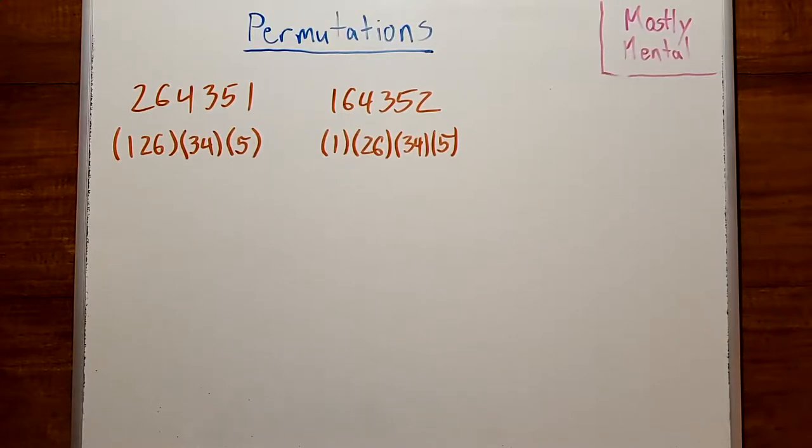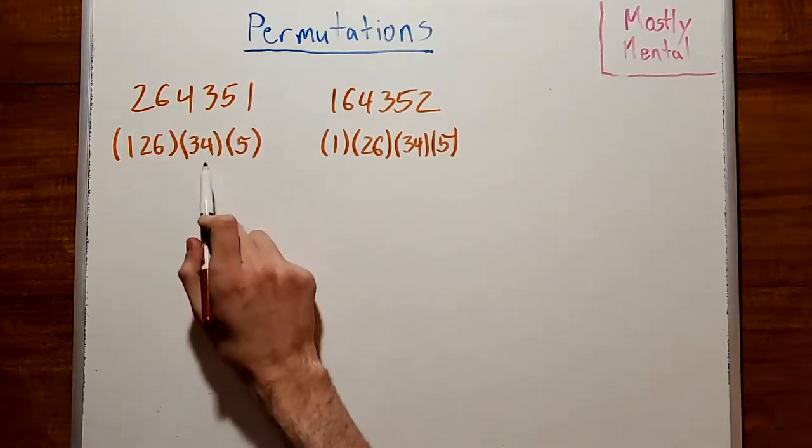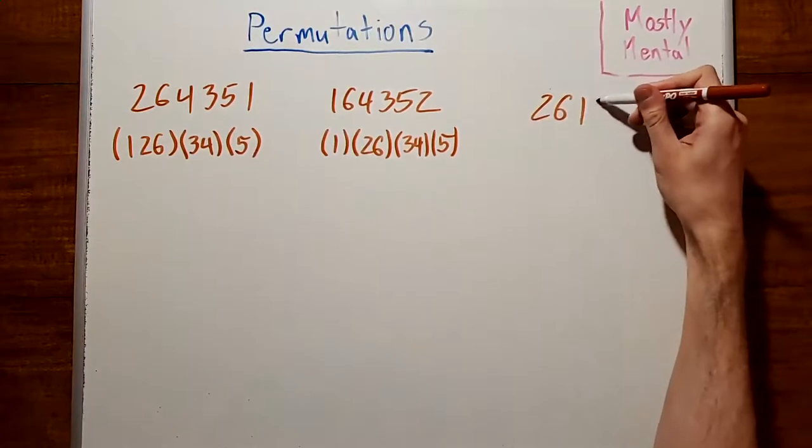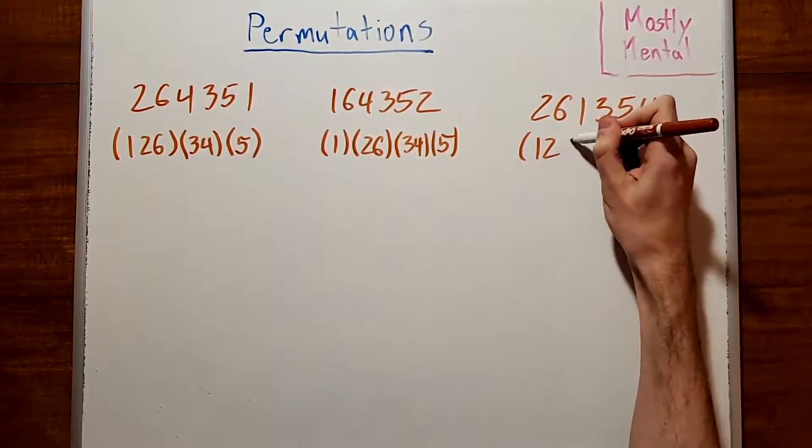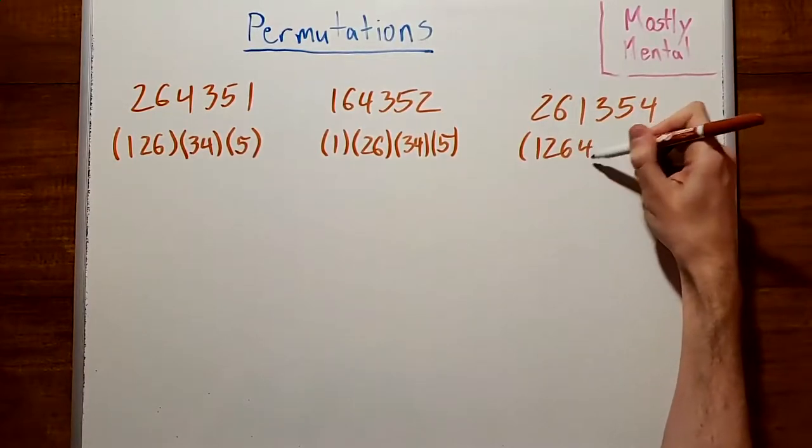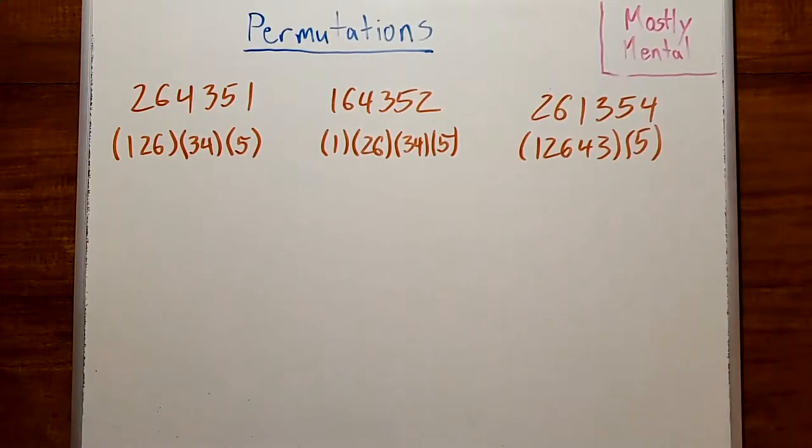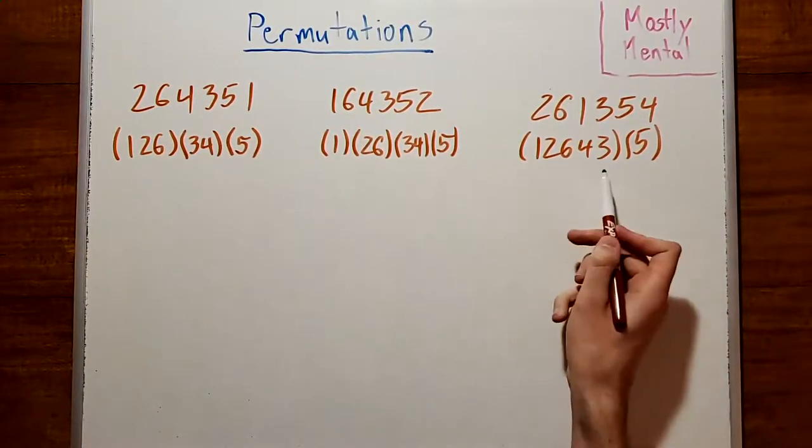How about if we swap two that are in different cycles like 1 and 4? Well, then we get 2, 6, 1, 3, 5, 4, which has cycle representation (1, 2, 6, 4, 3)(5). And here we've taken these two cycles and merged them together.